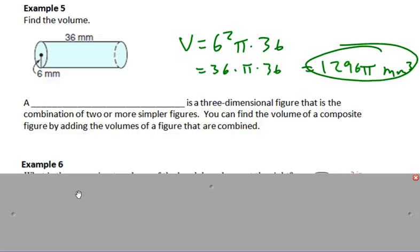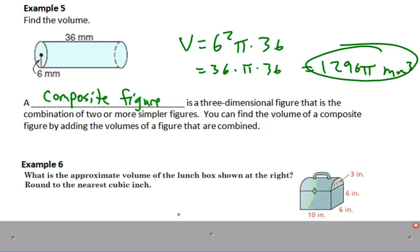A composite figure is a three-dimensional figure that is a combination of two or more simpler figures. You can find the volume of a composite figure by adding the volumes of the figures that are combined.